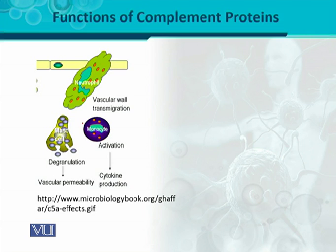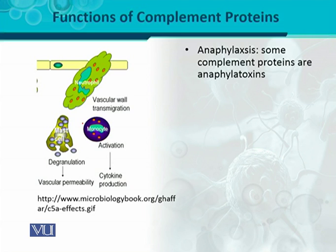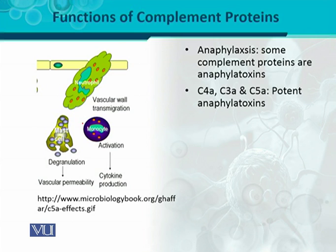Another important function of the complement protein is anaphylaxis. 'Ana' means against and 'phylaxis' means protection, so anaphylaxis is against protection. Some complement proteins serve as anaphylatoxins — specifically C4A, C3A, and C5A are potent anaphylatoxins. These cause hyperactivation of immune cells; neutrophils move, and mast cells — a very good target for anaphylatoxins — are activated.